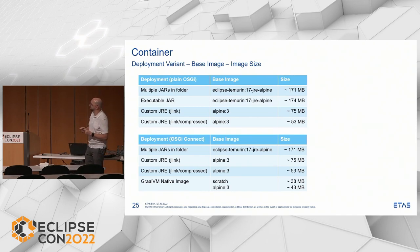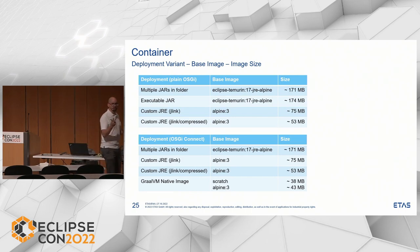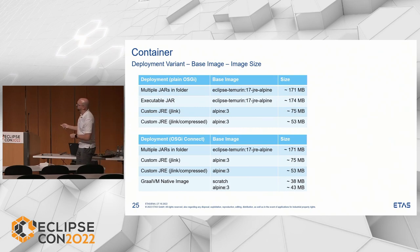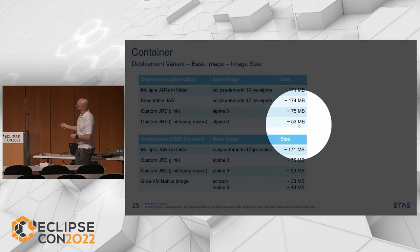Here's the comparison of image sizes — there are two more entries now because jlink has an option to compress. If my goal is to make it smaller I can enable jlink's compression feature and the resulting image is about 53 megabytes. If I use the GraalVM native image with a scratch base image I get to 38 megabytes — that's a real difference.